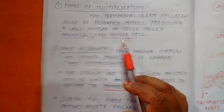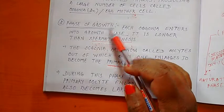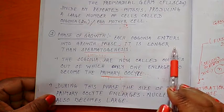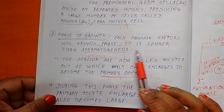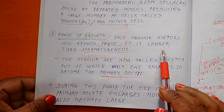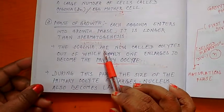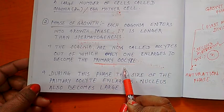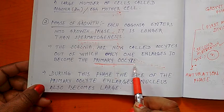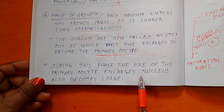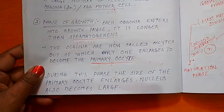Then the second phase — the phase of growth. Each oogonium enters into the growth phase. This phase is longer than in spermatogenesis, meaning the time of the growth phase in oogonia is longer than the time taken in spermatogenesis. The oogonia now give rise to oocytes, out of which only one enlarges to become a primary oocyte. The primary oocyte is also diploid. During this phase, the size of the primary oocyte enlarges and the nucleus also becomes enlarged.